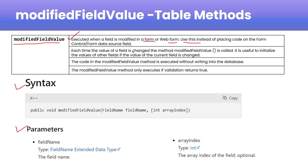Basically you can write it in the table method. The second point is that each time the value of a field is changed, ModifiedFieldValue is called. If you change a particular field, this method will be called. It is useful to initialize the value of another field when the value of the current field is changed.